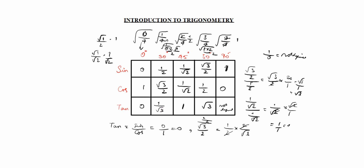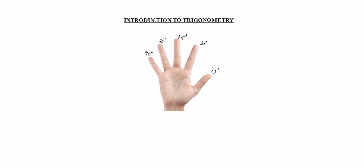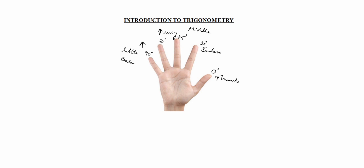You can also use a finger trick. Take 0°, 30°, 45°, 60°, 90° assigned to the thumb, index, middle, ring, and little finger respectively.